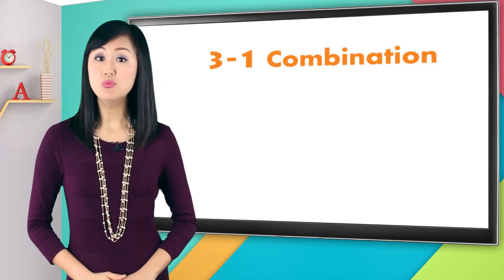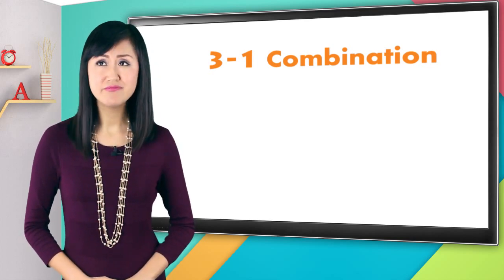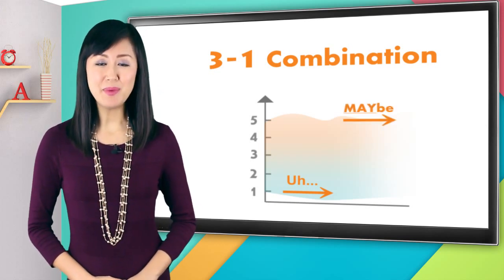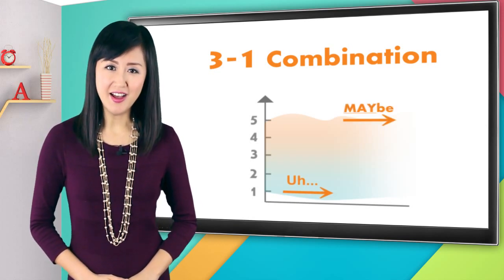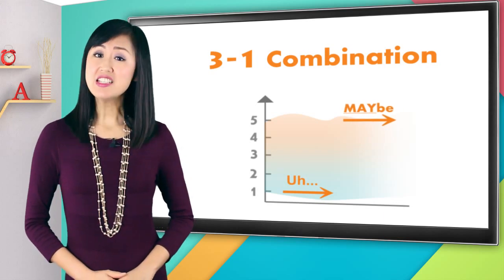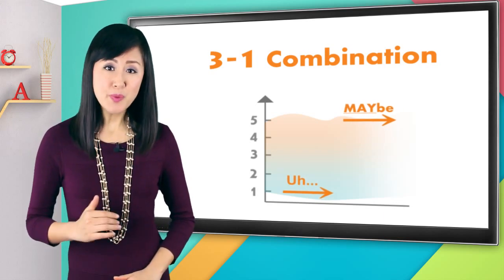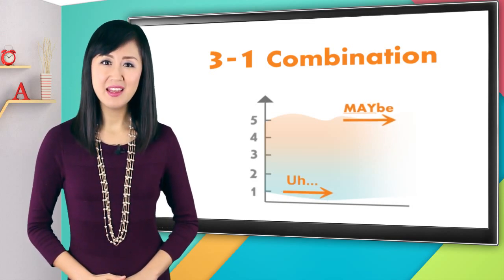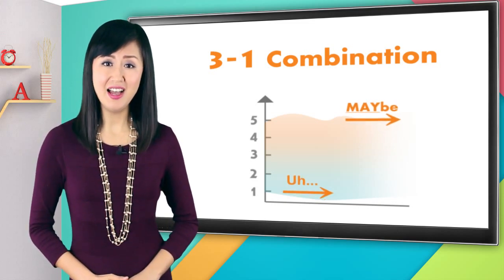Remember, third tone is what did you have for lunch yesterday? And first tone is maybe, so we have may. This combo takes you from the lowest part to the highest part of your voice range. A mei, it sounds like a haa.